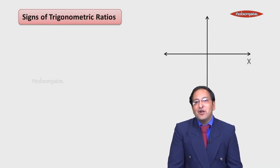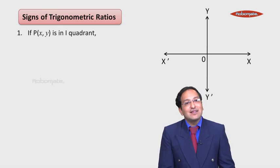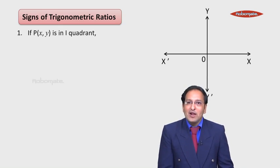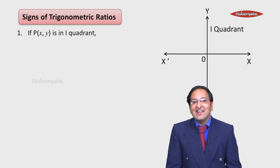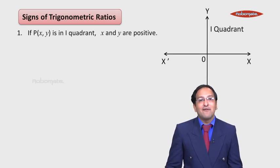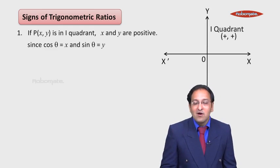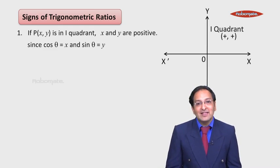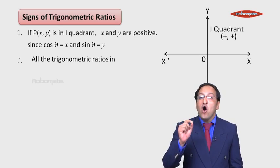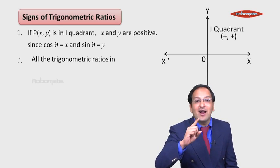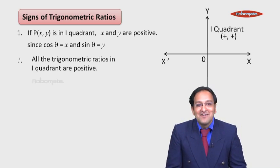Now I would like to tell you the signs of trigonometric ratios. First, draw the x-axis and y-axis. If point P(x, y) is in the first quadrant, then x and y are always positive. Since cos θ equals x and sin θ equals y as per the previous slide, therefore all the trigonometric ratios in the first quadrant must be positive.